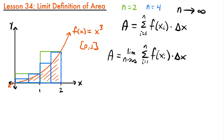To evaluate this and find the area as our number of rectangles approaches infinity, we need to recall what delta x and x sub i are equal to. x sub i represents the values of x where your rectangles meet your function. In our graph, the upper right corner of each rectangle is touching the function, so we're approximating using right endpoints. We could also use left endpoints, where the upper left corner connects with the function, which would give a slightly different approximation value. However, when we use an infinite number of rectangles, it won't matter — the value will be the same for right or left endpoints.